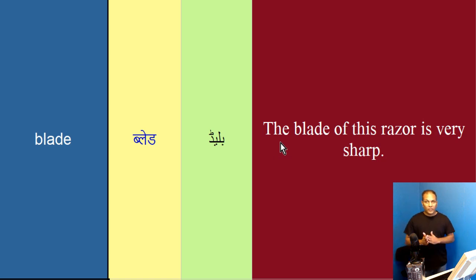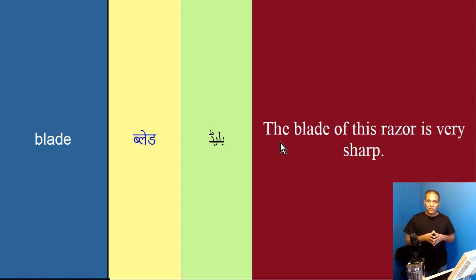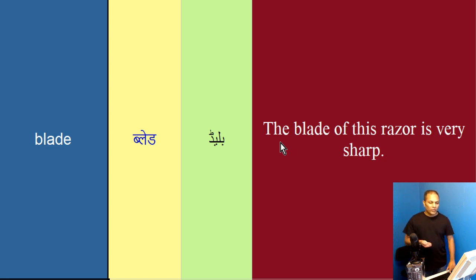Yehaan humar paas pahla example sentence hai: the blade of this razor is very sharp. Ke is razor ki blade bohat zyada sharp hai, ahtiaat se use kerna. The blade of this razor is very sharp.